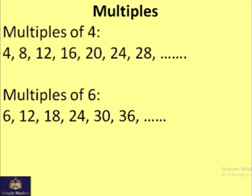Now, moving to multiples. A multiple is the exact opposite of factors. Factors are limited in number, but multiples are unlimited. For example, multiples of 4 are: 4, 8, 12, and so on — like a times table going up to infinity. Similarly, multiples of 6 start at 6 and keep increasing by 6.